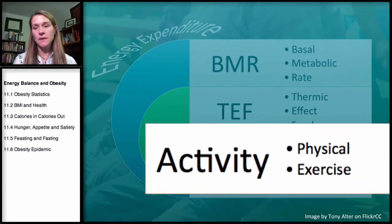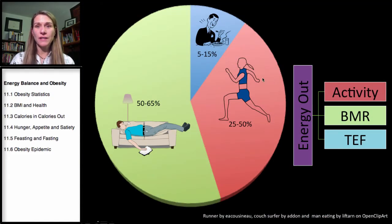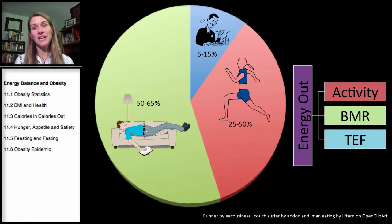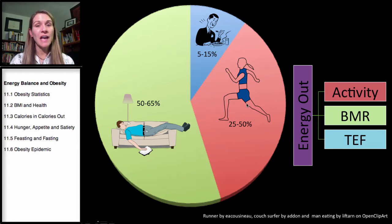Physical activity is the last component of energy expenditure — the activities and exercises we choose to do. BMR is the largest component of total energy expenditure and the one we have the least control over — genetics, height, age, and climate all play a role. However, one aspect you can control is physical activity's indirect effect: the more active you are, the more lean muscle mass you have, and therefore the more calories you burn at rest.